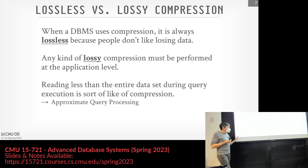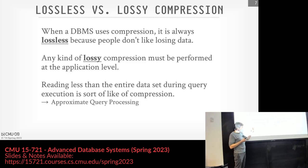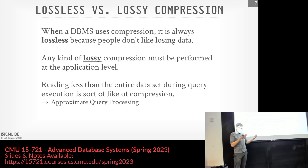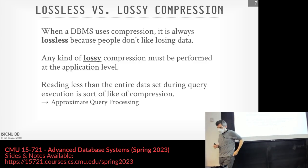Approximate query processing — where we're sampling data to produce approximate results — is basically the same thing. It achieves something similar, but in that case we still have the original data; we're just sampling it.